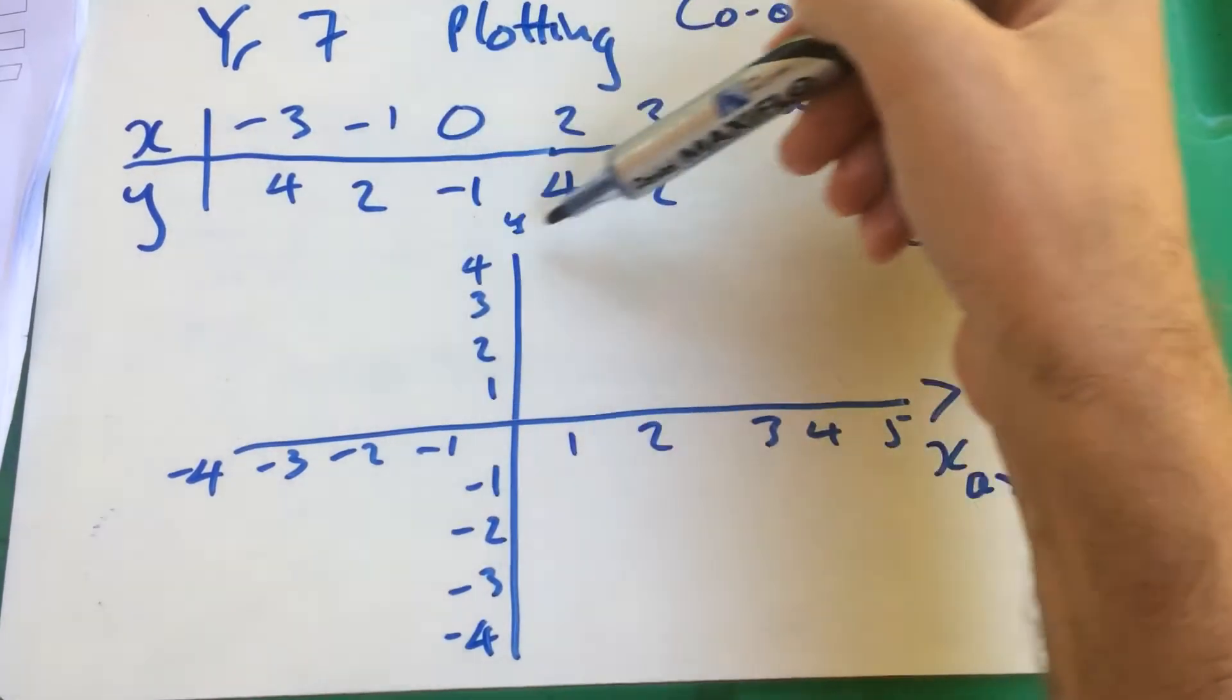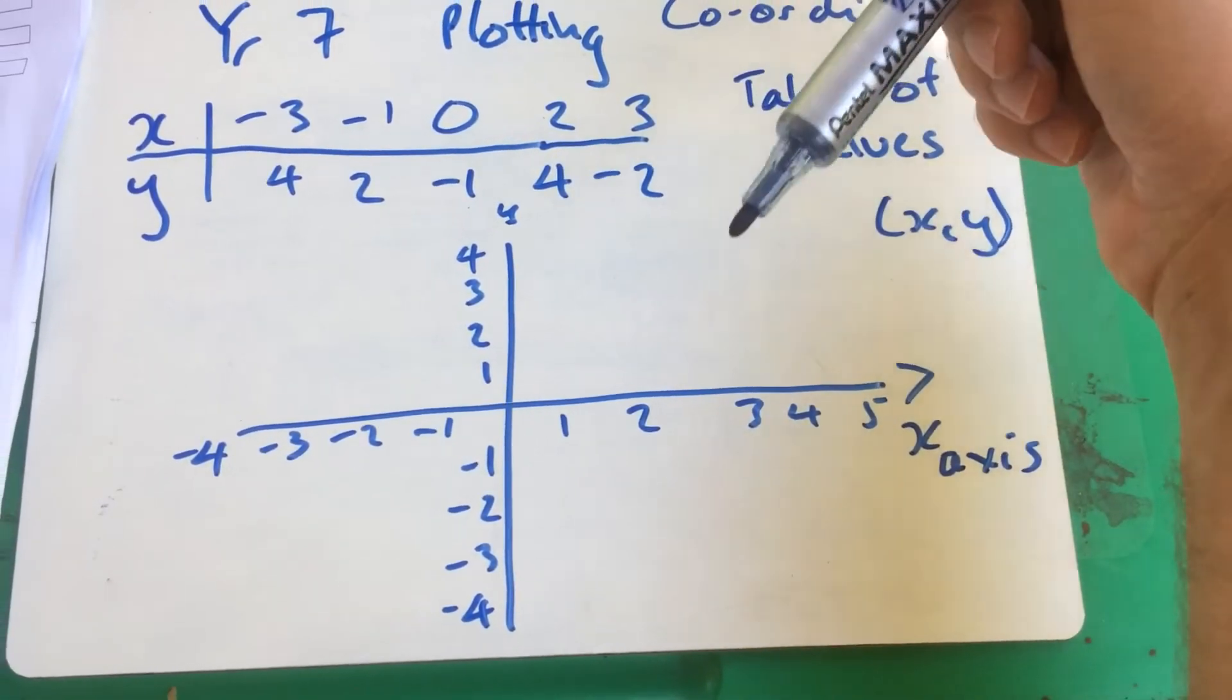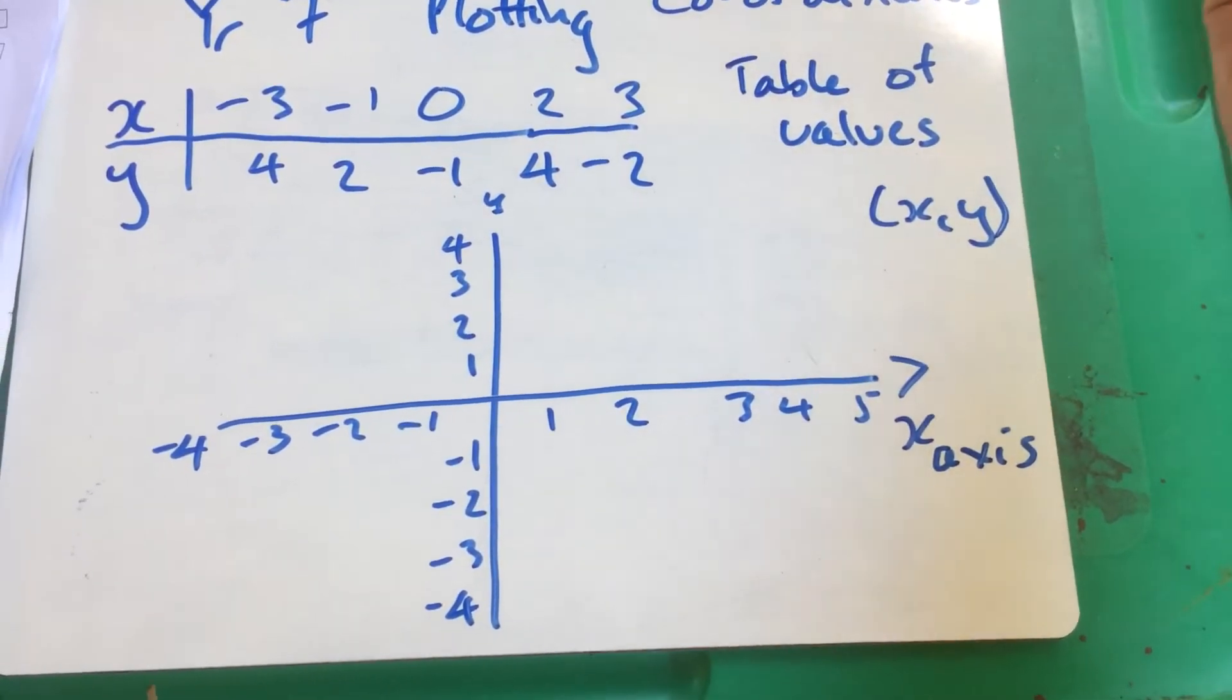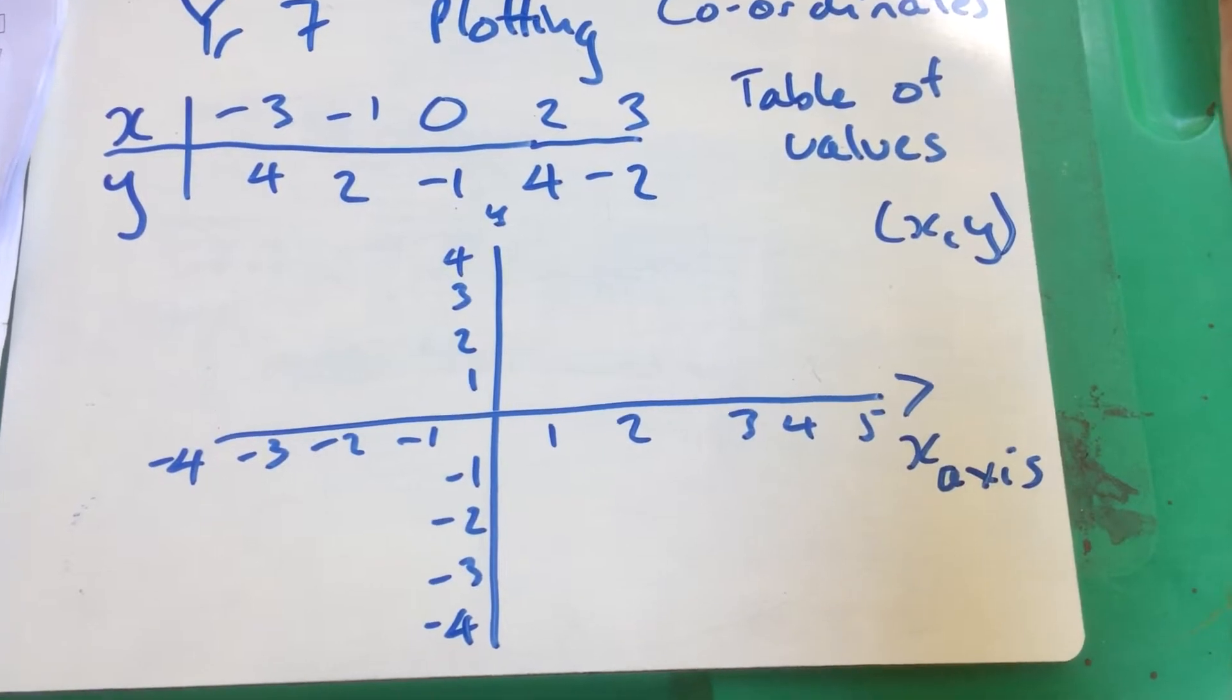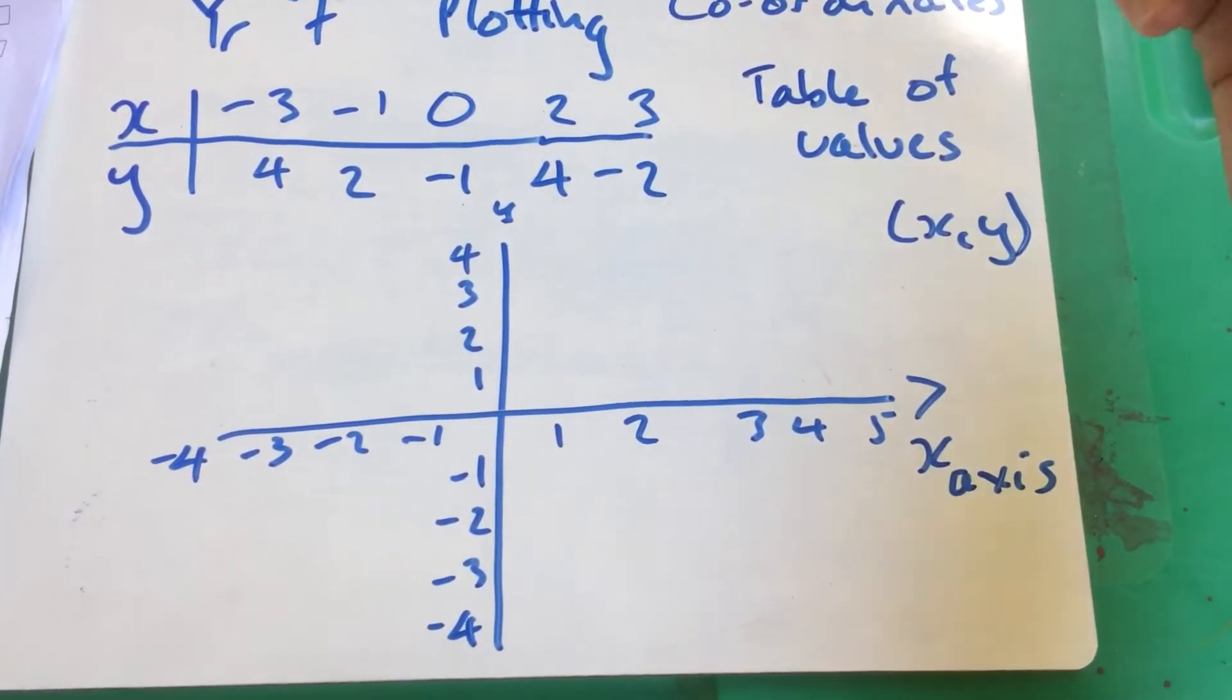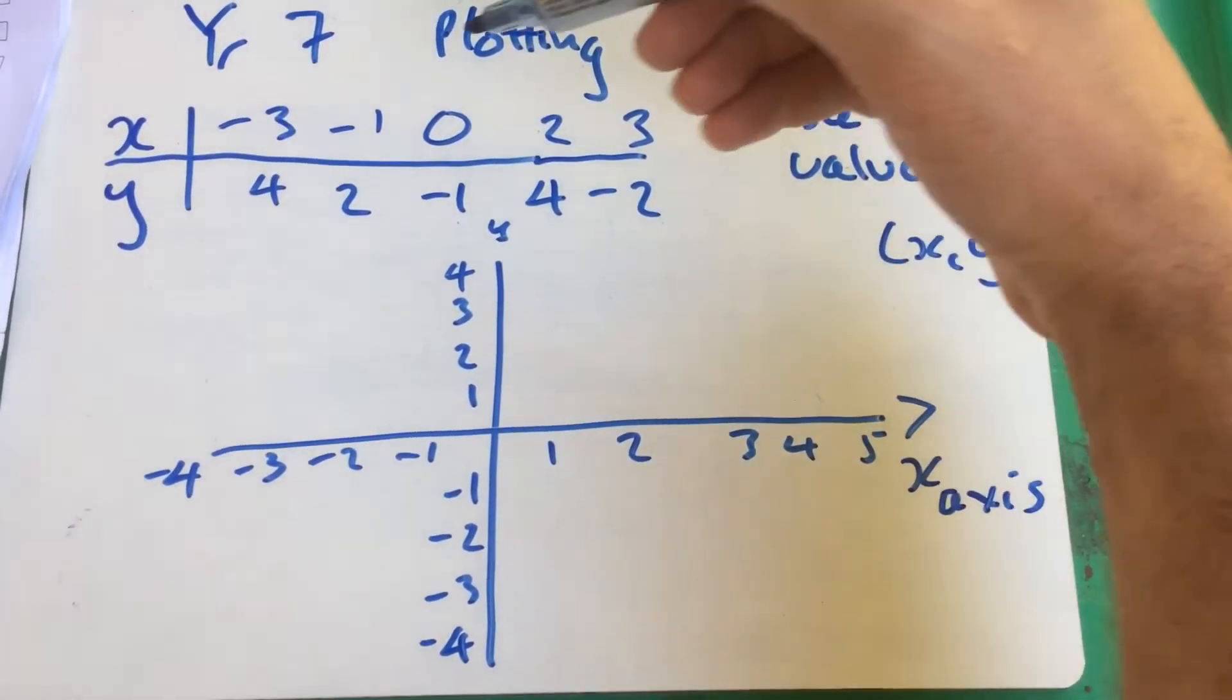So we've got a table of values. Now, we could have some function that generates those numbers, or they could represent different variables, maybe a scatter diagram of two variables that someone's doing some research on. But for this exercise, we just want to plot those pairs from this table of values.